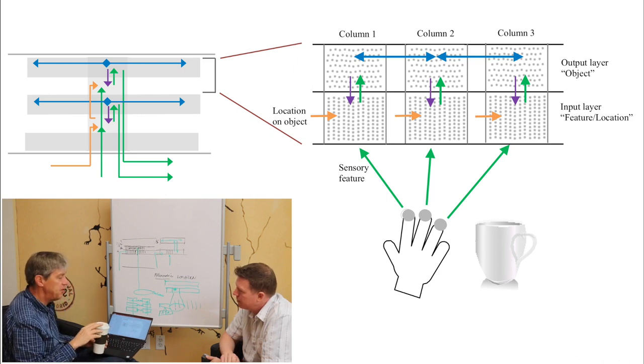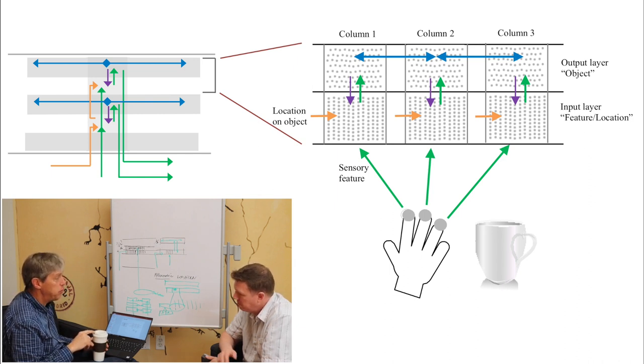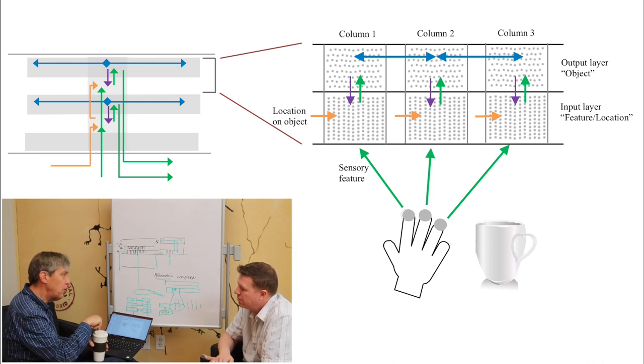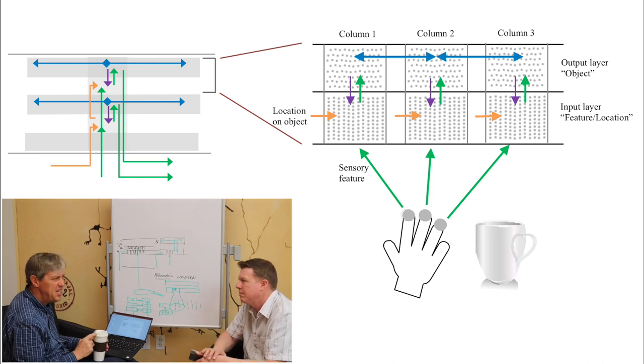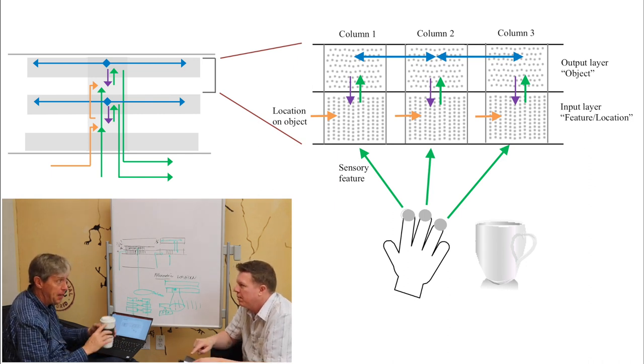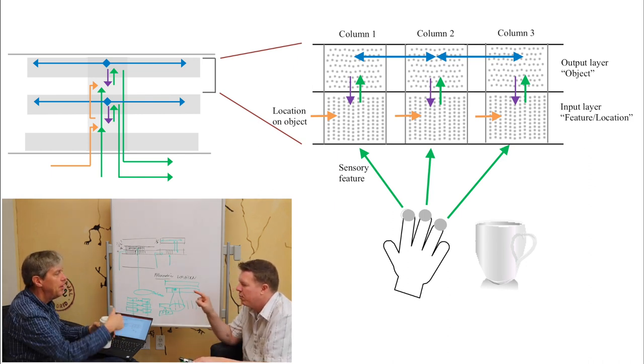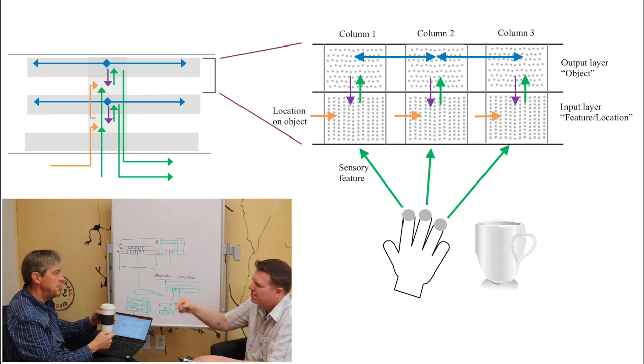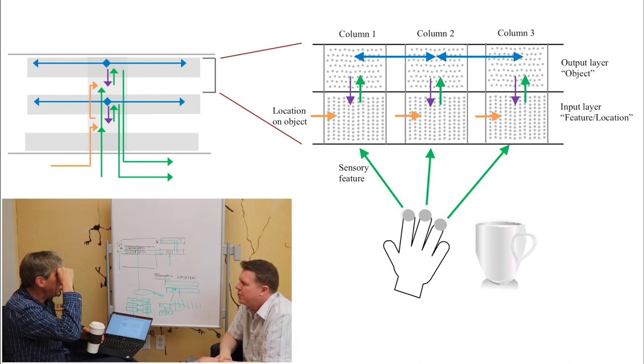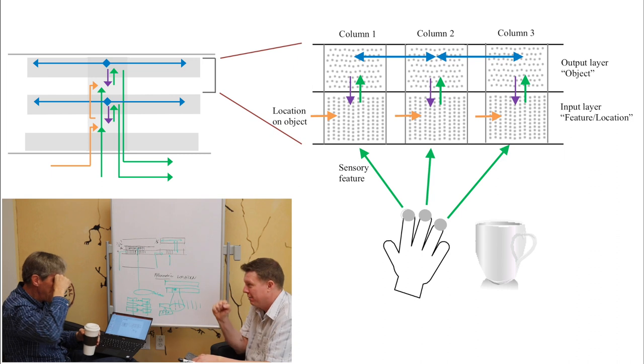So my index finger is touching this coffee cup. It says, I'm feeling this feature at this location. That on its own may not be sufficient to identify the coffee cup. Probably isn't. I could identify the coffee cup. I move my finger in multiple locations. I can just do this like this.